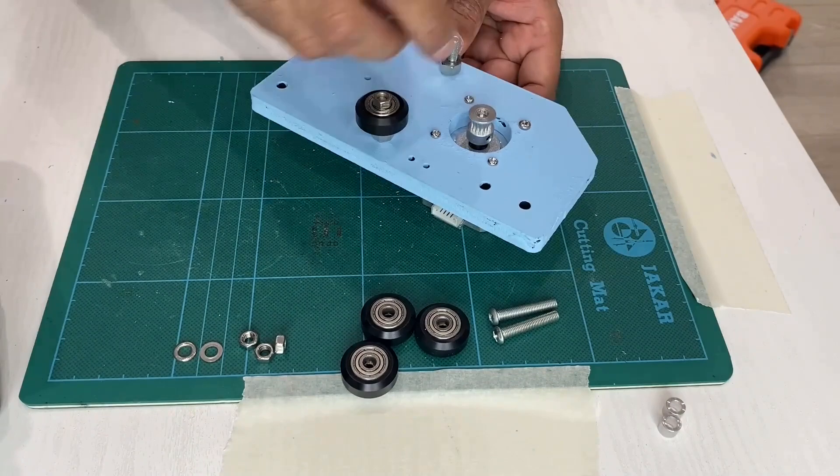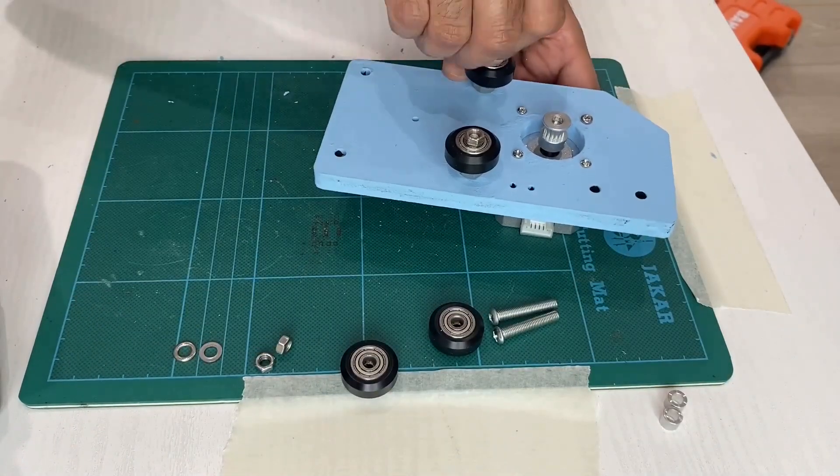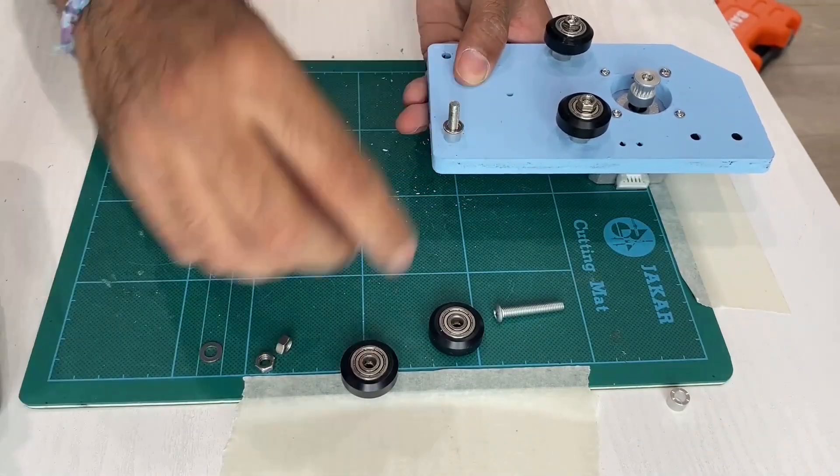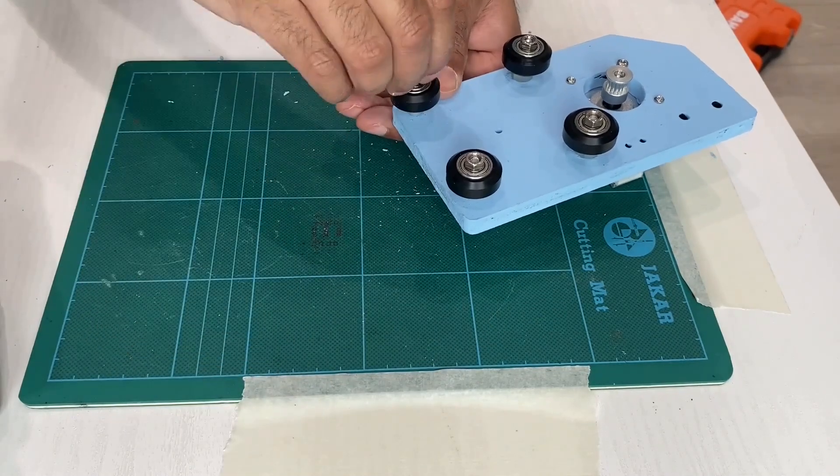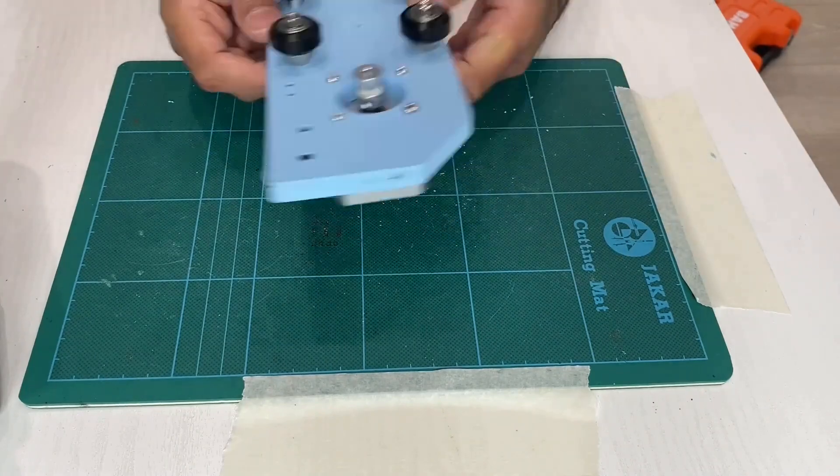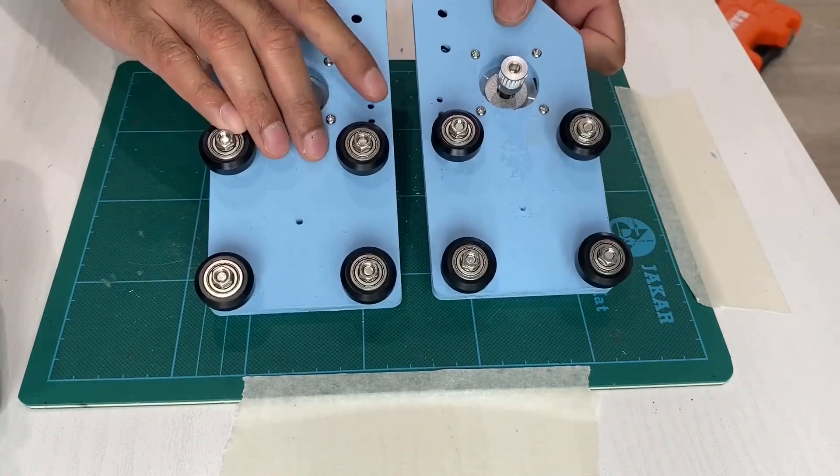It was then time to assemble the first part of the frame. This is the Y-axis using four roller wheels and a NEMA 17 stepper motor.